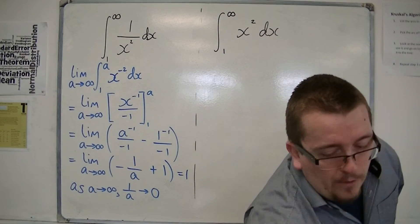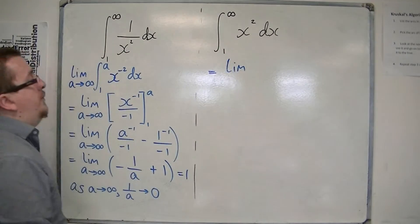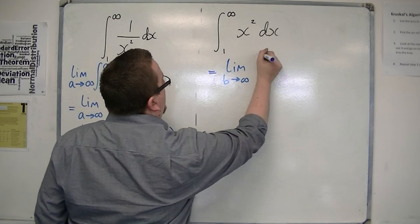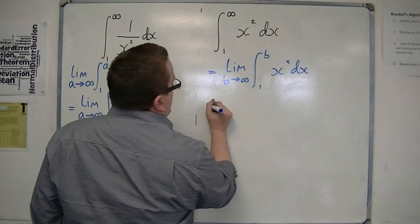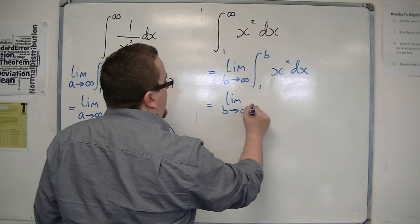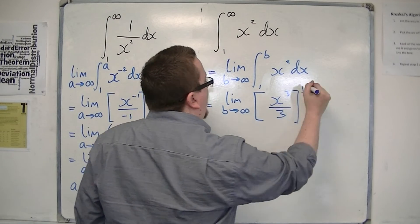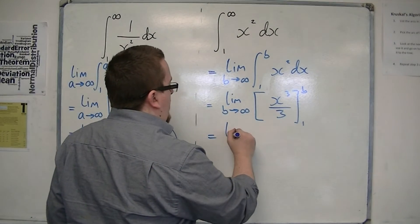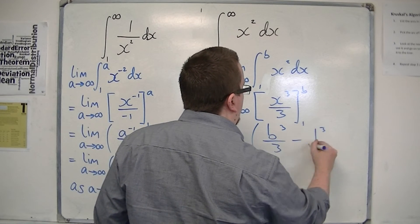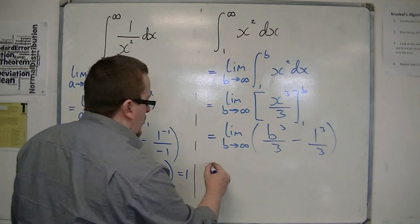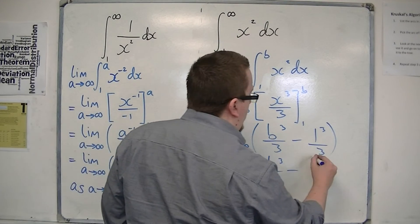Now let's see what happens when I deal with 1 to infinity of x squared dx. I would do it the same way — this time I'll use the letter b — so I'm going to take the limit as b tends to infinity of the integral from 1 to b of x squared dx. The limit as b tends to infinity: add 1 to the power, divide by the new power, evaluate between 1 and b — so this is the limit as b tends to infinity of b cubed over 3, take away 1 cubed over 3, which is just 1 third.